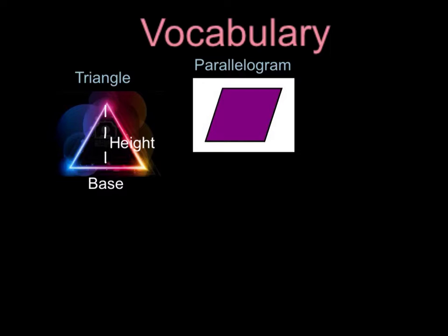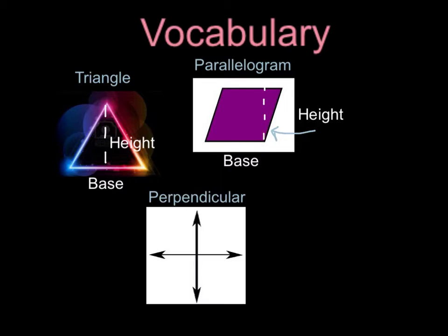Did you know that a parallelogram also has a base and height? The base of this parallelogram is also the bottom of the figure, just like in the triangle. A parallelogram has four possible bases. Just like with a triangle, the height of a parallelogram is shown using a dotted line — here is the height. These lines are perpendicular, meaning they meet at a right angle. Remember, the height and base of a parallelogram and a triangle always meet at a perpendicular or right angle.